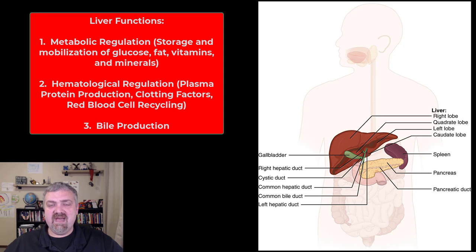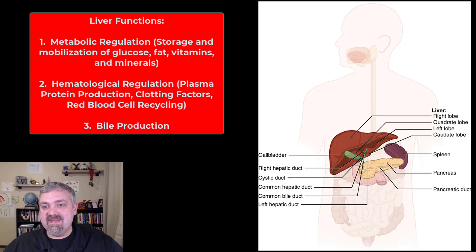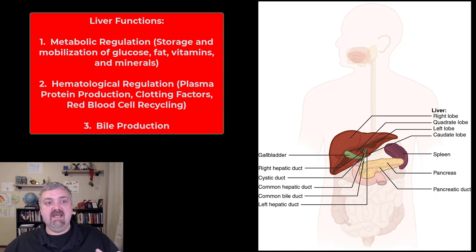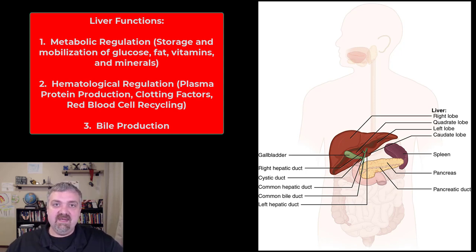Another metabolic function is the storage of vitamins and minerals. The liver is a mineral storage depot — it stores a lot of iron and other minerals. It also stores your fat-soluble vitamins A, D, E, and K, as well as B12. B12 is a water-soluble vitamin, but it is stored; a healthy liver should be able to store up to five years' worth of B12. This is why organ meats are considered the most nutrient-dense foods on the planet — the liver stores nutrients. Other animals' livers do just the same.